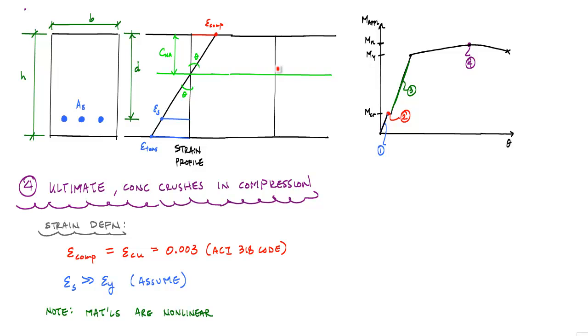It would actually look something like this. If you can imagine, if this value here of strain has reached 0.003, the ultimate compressive strain, the stress profile has become nonlinear. It kind of looks like the stress strain curve of concrete in that it's going to have its peak right about here. Our stress profile looks like this in compression.